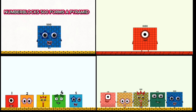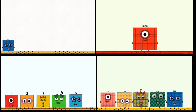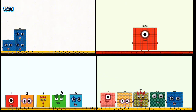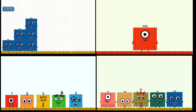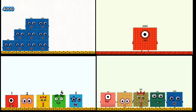Number Blocks 500 forms a pyramid. 500, 1,000, 1,500, 2,000, 2,500, 3,000, 3,500, 4,000, 4,500.